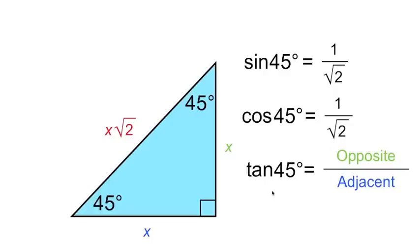The tangent is opposite over adjacent, so the tangent of 45 degrees is x over x. The x's cancel, so the tangent of 45 degrees is 1.